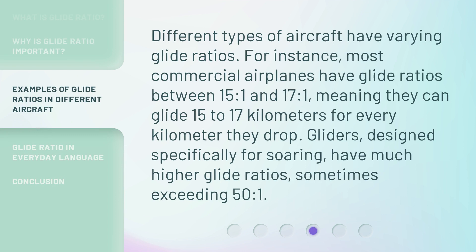Different types of aircraft have varying glide ratios. For instance, most commercial airplanes have glide ratios between 15 to 1 and 17 to 1, meaning they can glide 15 to 17 kilometers for every kilometer they drop. Gliders, designed specifically for soaring, have much higher glide ratios, sometimes exceeding 50 to 1.